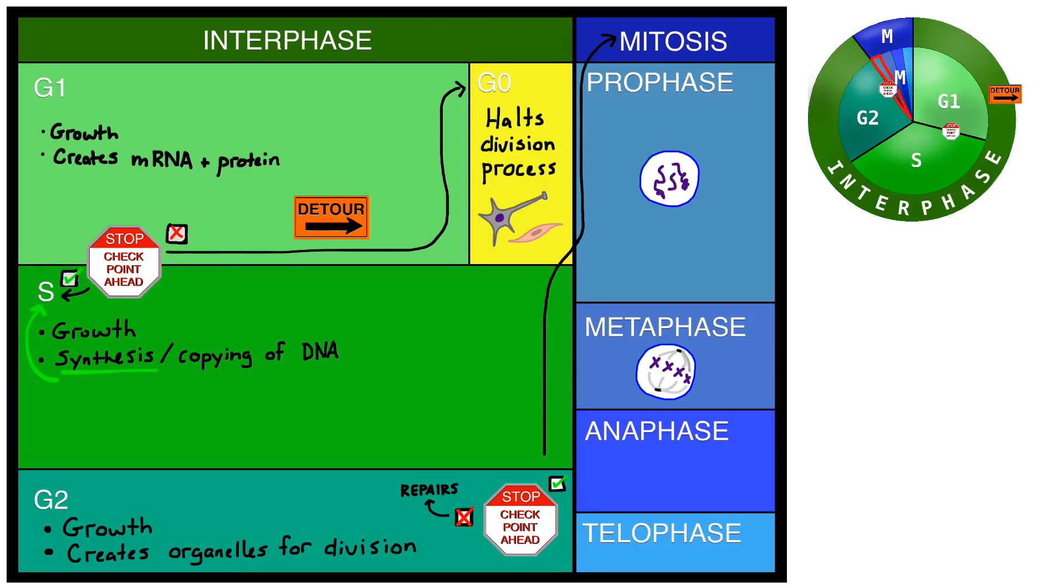Spindle fibers attach to each one and prepare to pull the genetic material to opposite poles. It is absolutely essential that the spindle fibers correctly attach to each pair of chromatids.